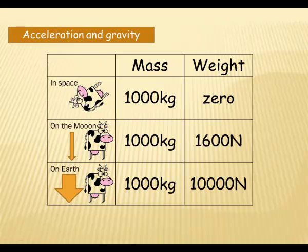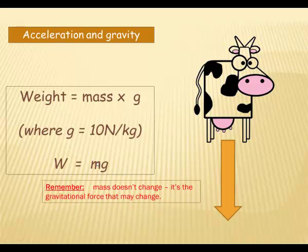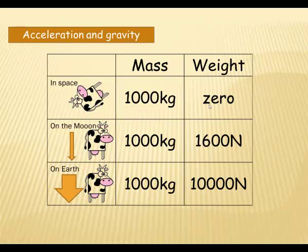Now suppose we launch our cow into space. Into space there is no gravity. Her mass is 1,000 kilograms. It stays the same, doesn't it? It doesn't change. But because there's no gravity, she appears to have zero weight. Because her mass is 1,000. If G is zero, the constant is zero, 1,000 times zero is zero. So she is weightless. So in space, our cow has a mass of 1,000 kilograms and she has a weight of zero.